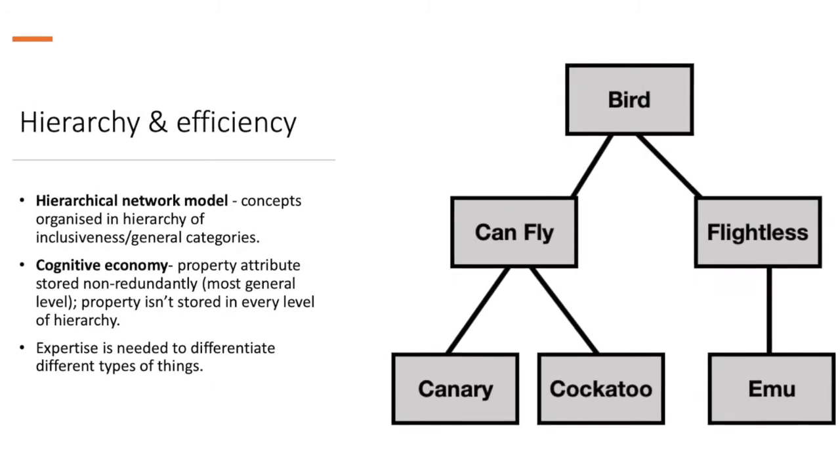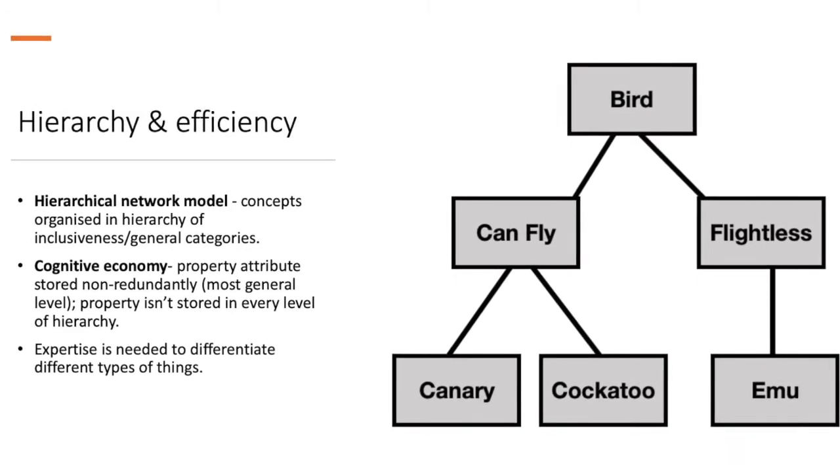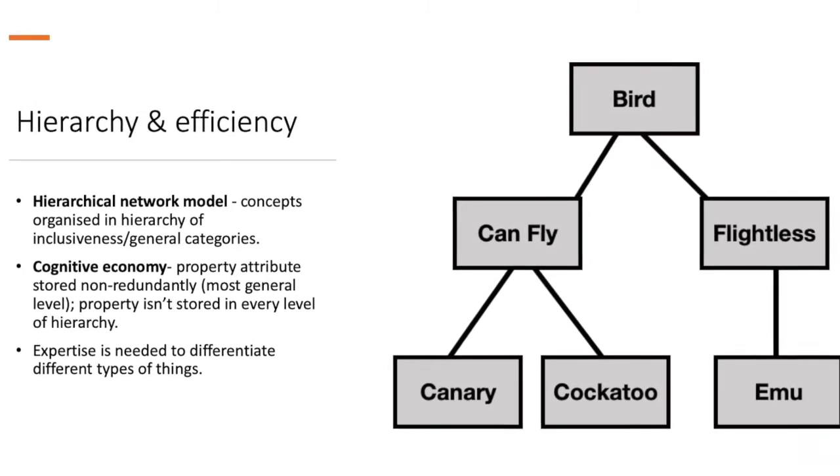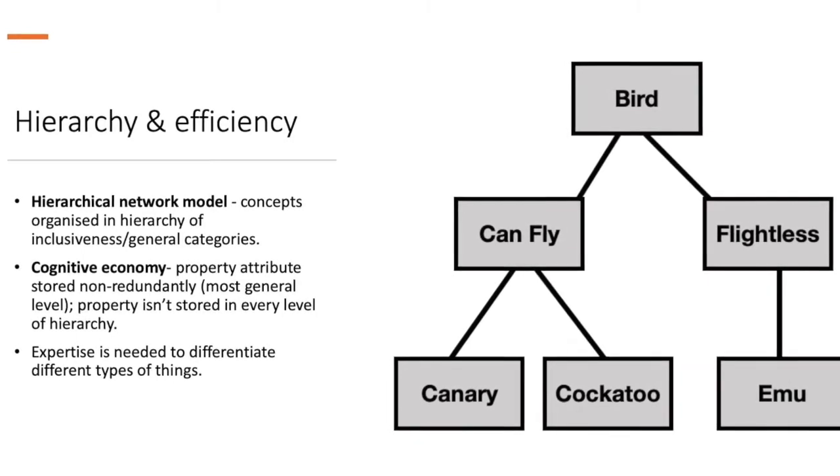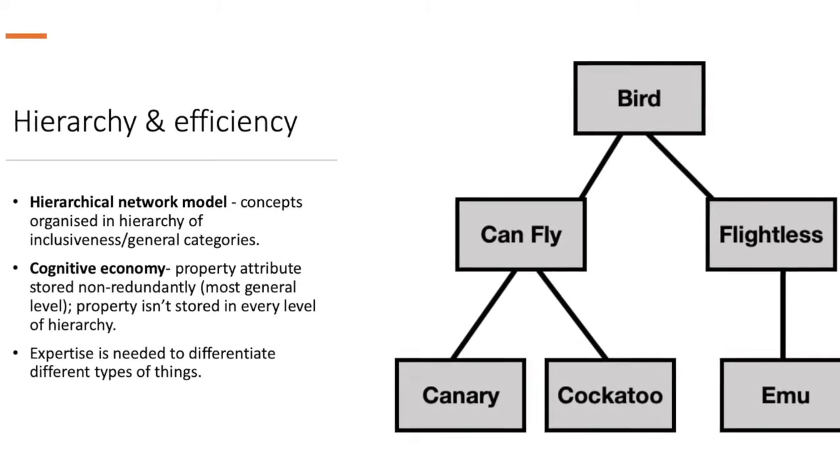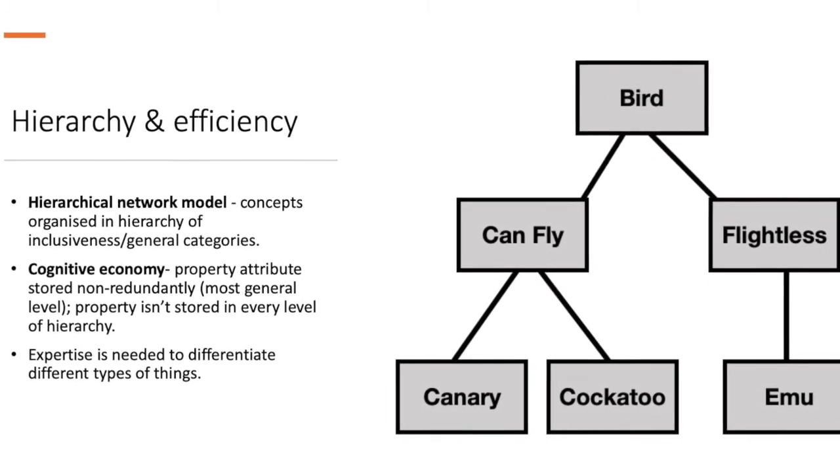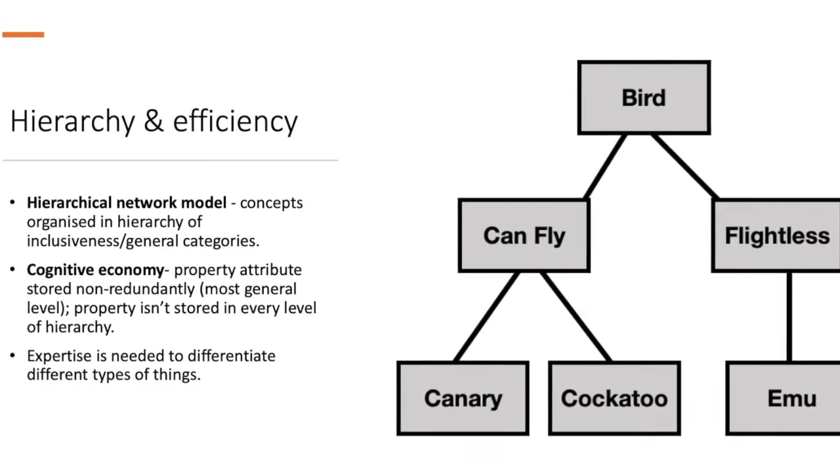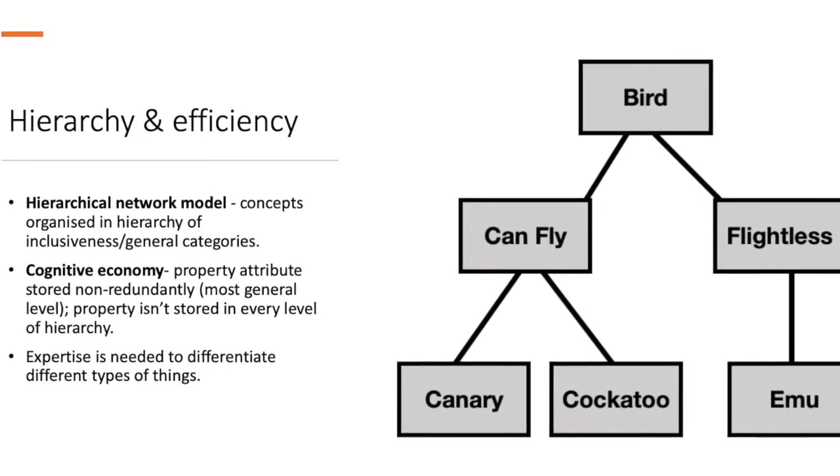For example, in this model I have bird on the top, and then the different properties of that bird can include whether the bird can fly or it cannot fly. So flightless birds would include emus, cassowaries, ostriches, penguins, etc.